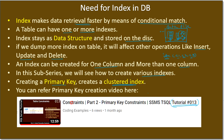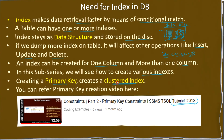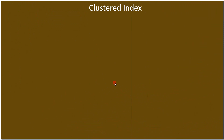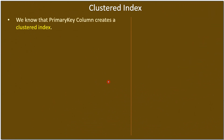When we create a primary key, a clustered index will get created for us. We know that the primary key column creates a clustered index. The clustered index works like a B-tree, which is a data structure. Whenever you create a primary key, SQL Server will create a clustered index, form a B-tree, and store that in a data file.